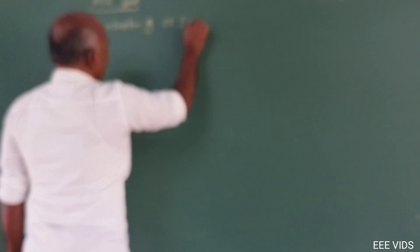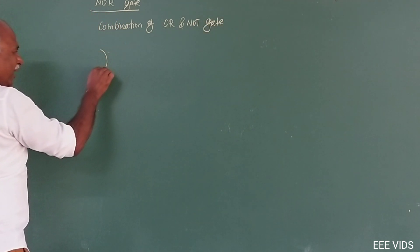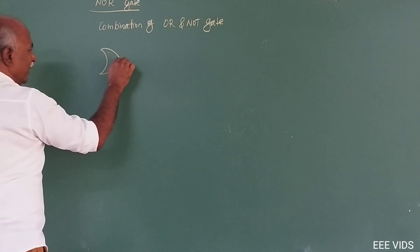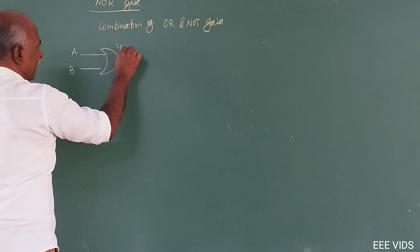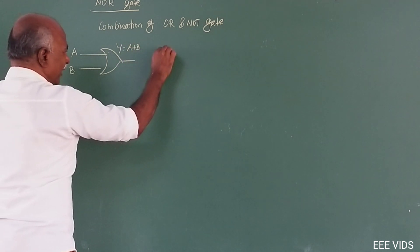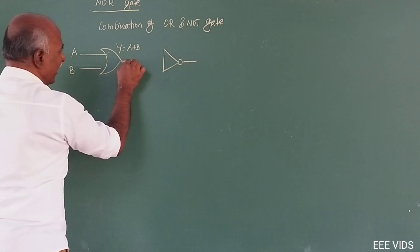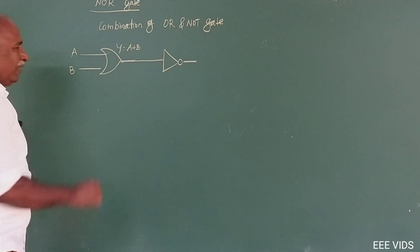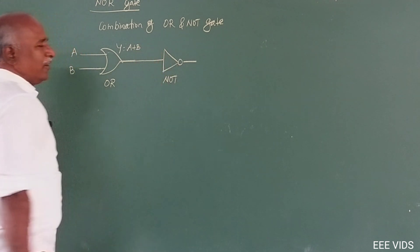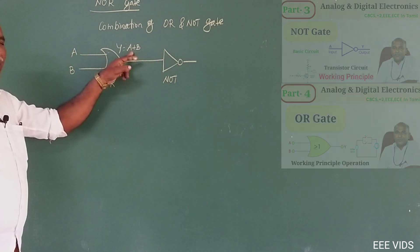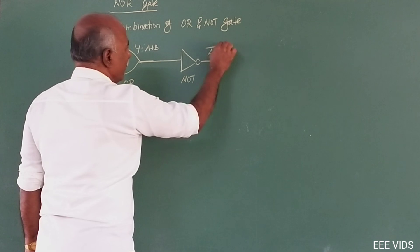OR gate and NOR gate — combining both gives the NOR gate. The basic symbol: OR gate symbol with inputs a and b. Output of OR gate is a plus b. One NOT gate is added — single input, output over every output. In the OR gate, output is given as input to the NOT gate. OR gate plus NOT gate — combining them gives the NOR gate. So input is a plus b.